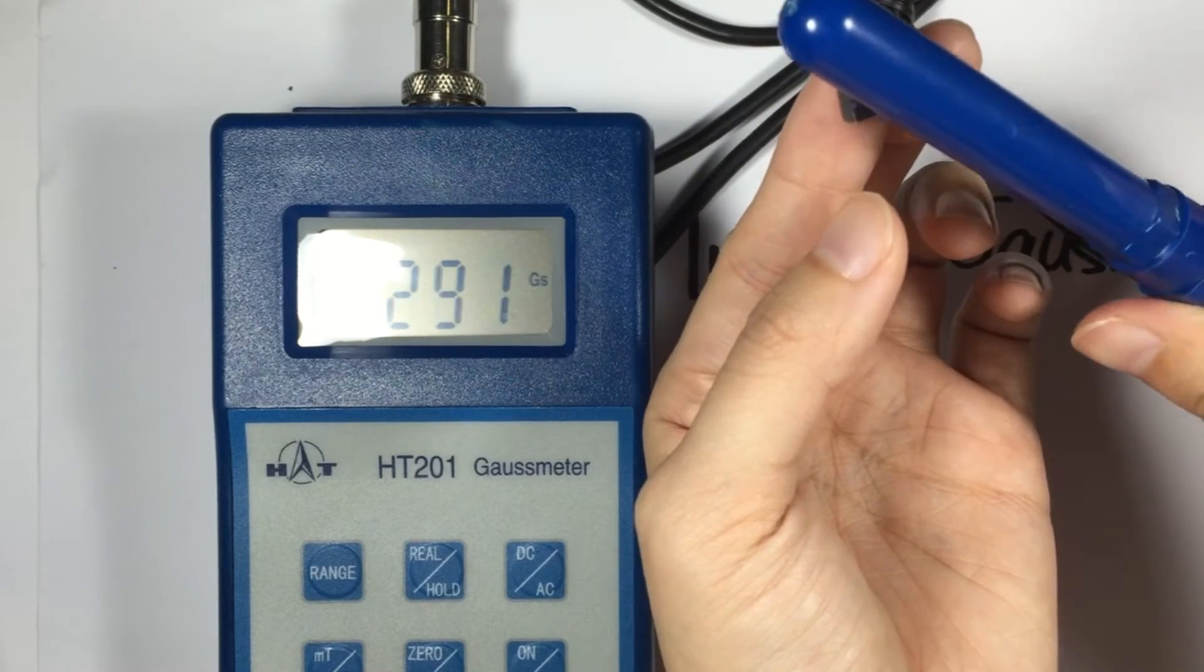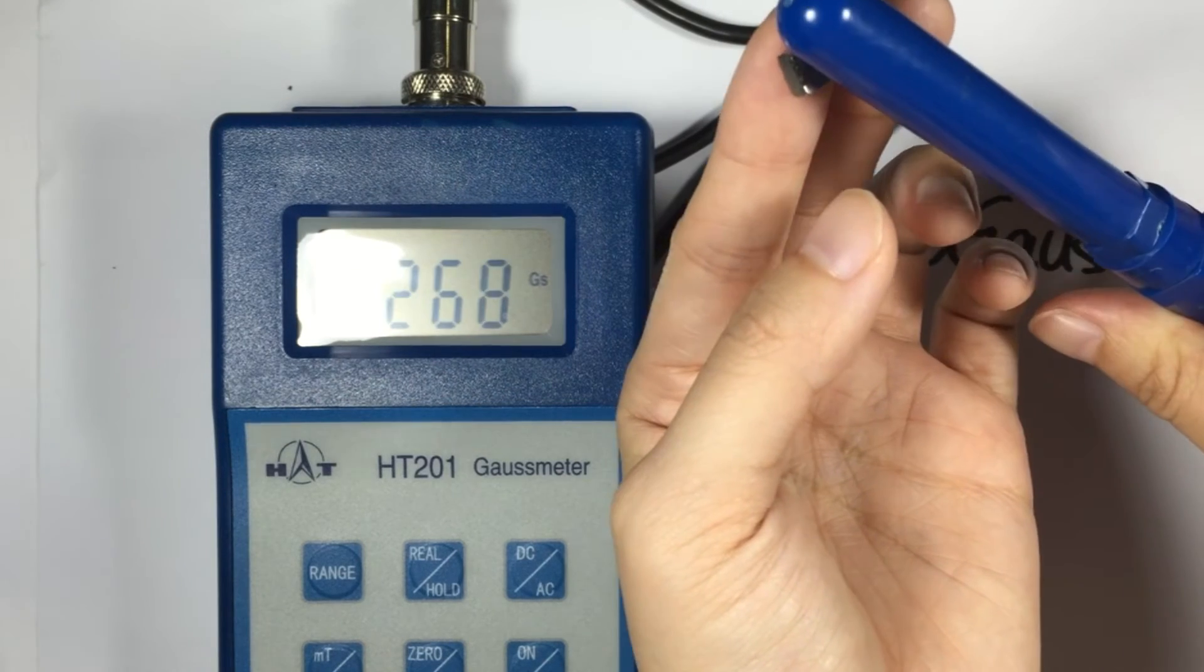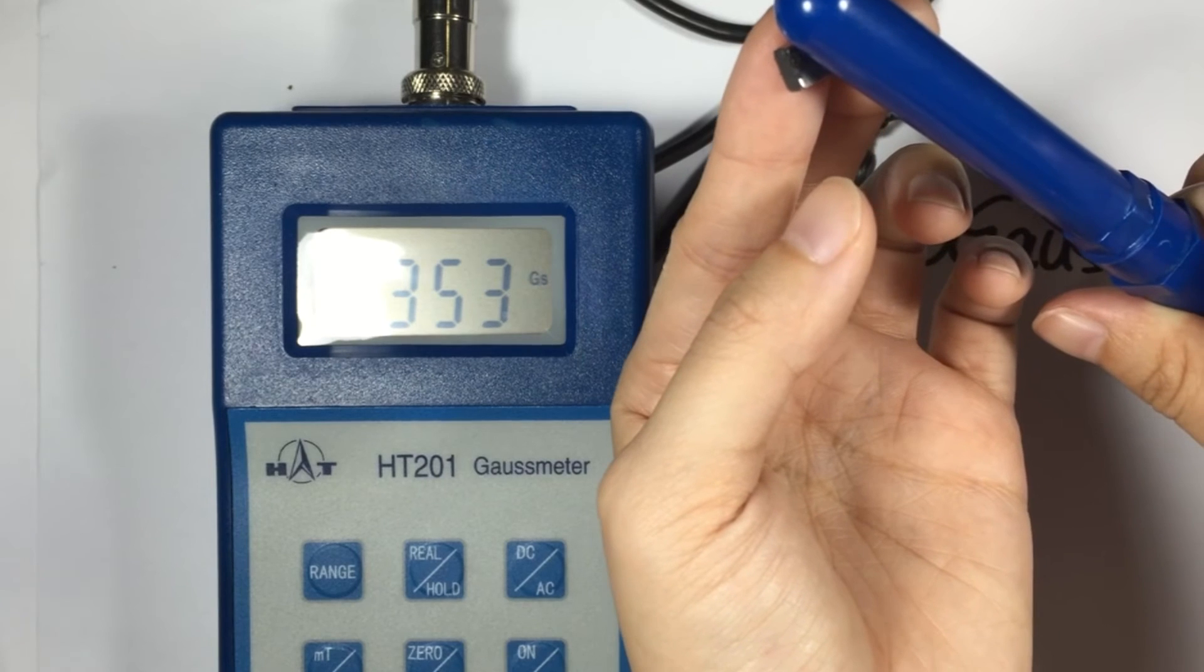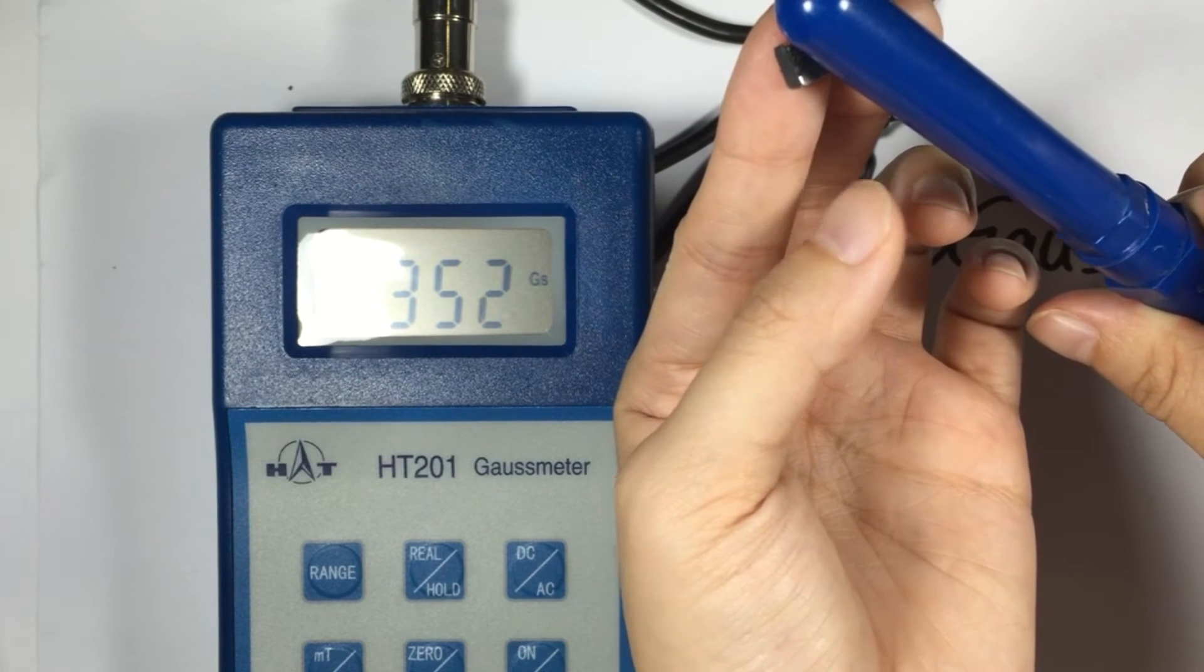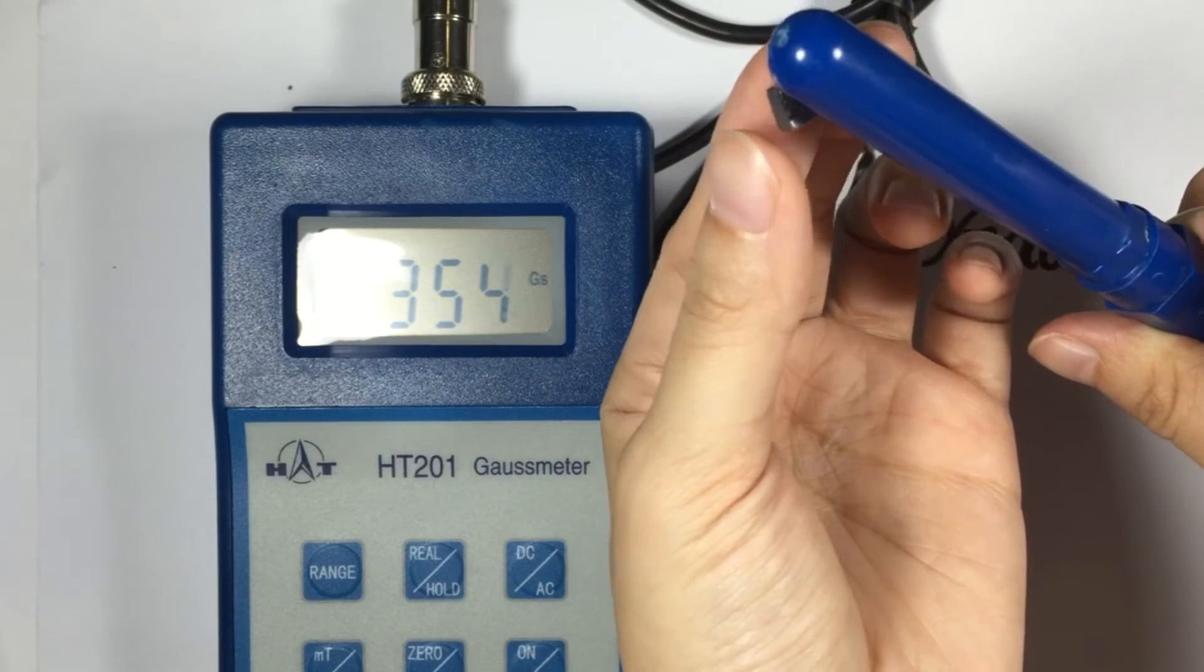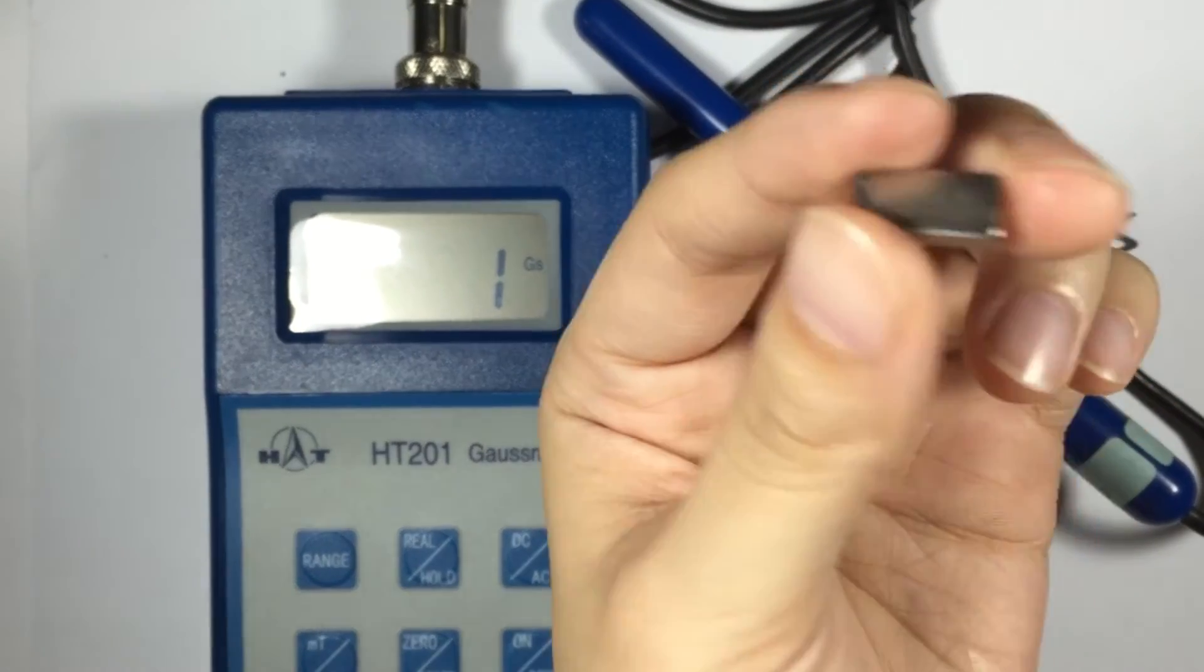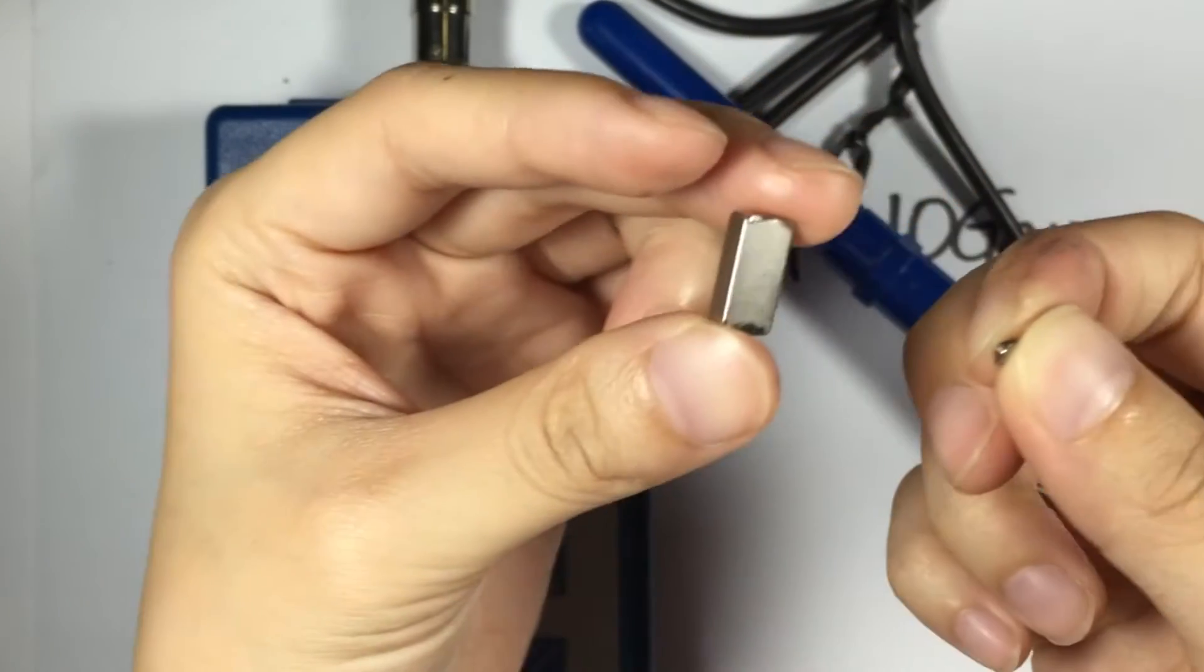3,000. Yeah, it is 3,000. It's about 3,530 something, or 40 something. So the size is 10 times bigger, the gauss is 10 times bigger.